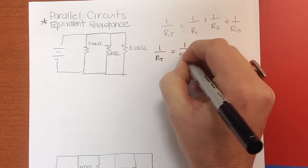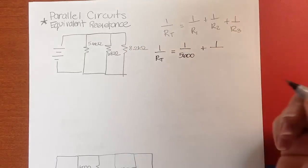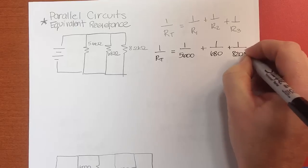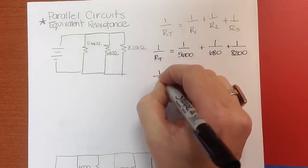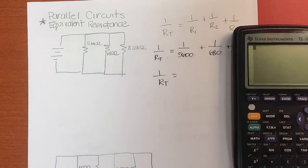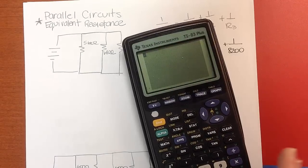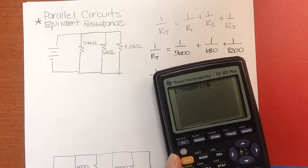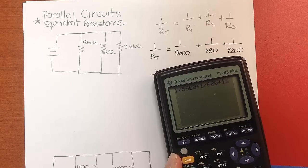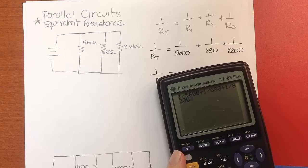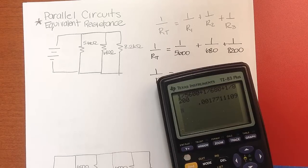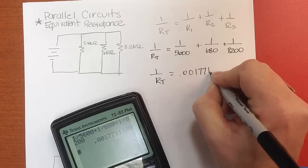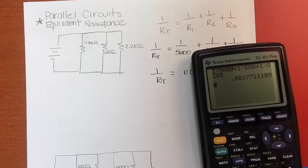1 over 5.6 kilo-ohms (which is 5,600 ohms), plus 1 over 680 ohms, plus 1 over 8,200 ohms. So 1 over R_T — now I can plug that into my calculator. I'm going to do 1 divided by 5,600 plus 1 divided by 680 plus 1 divided by 8,200, and I get 0.00111.